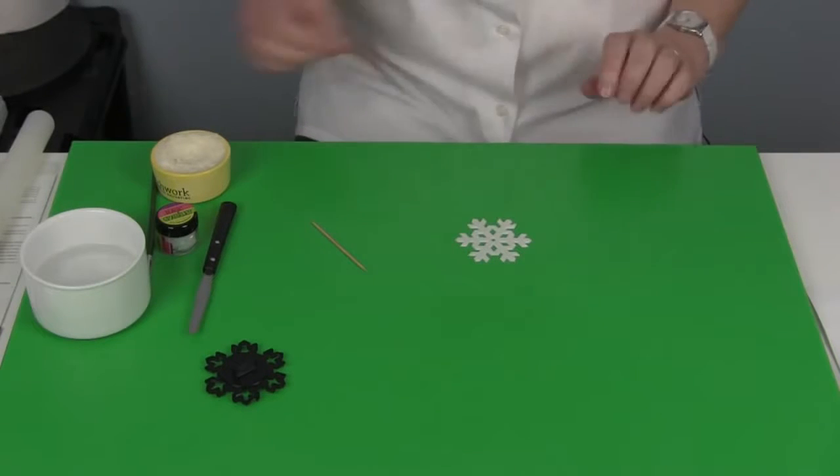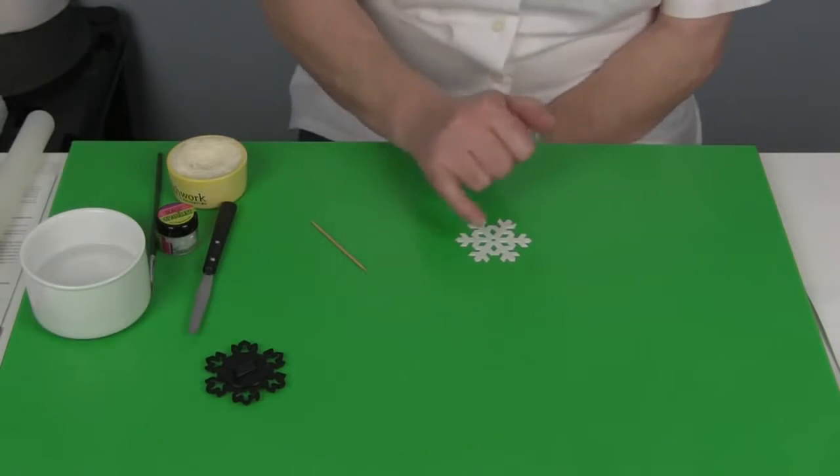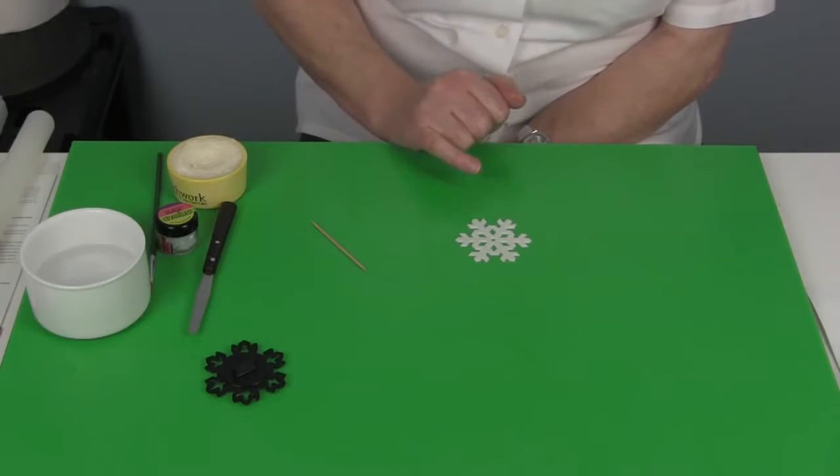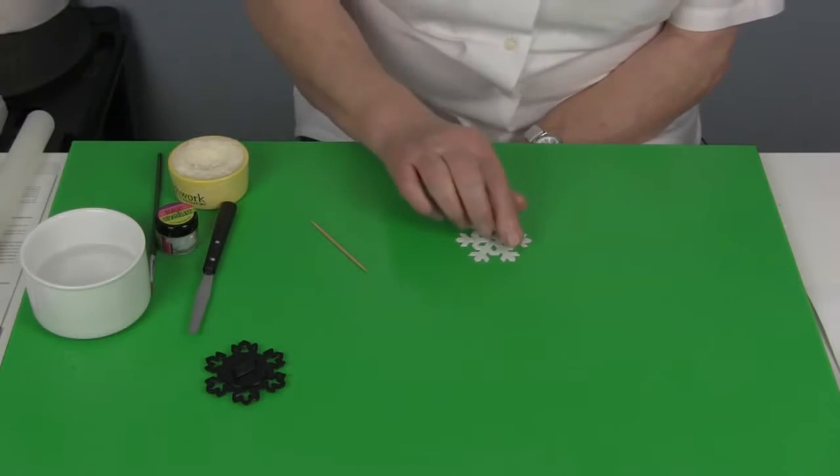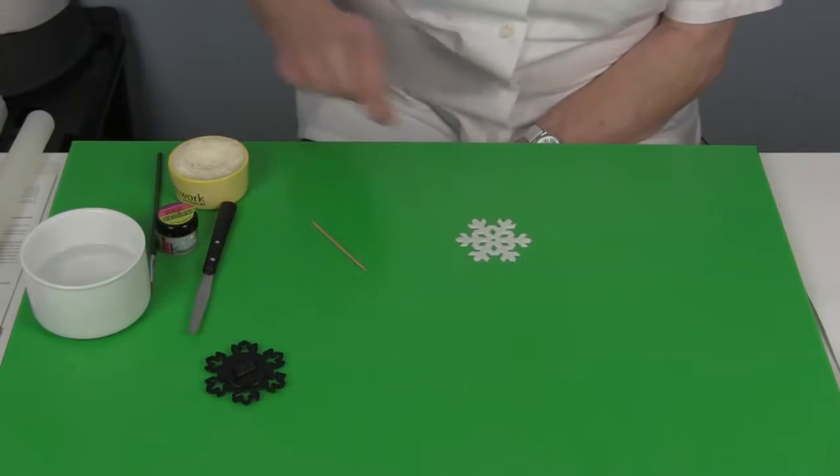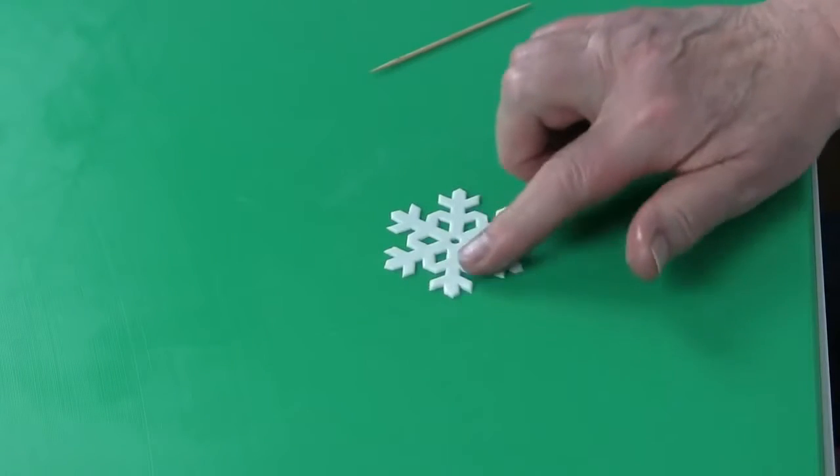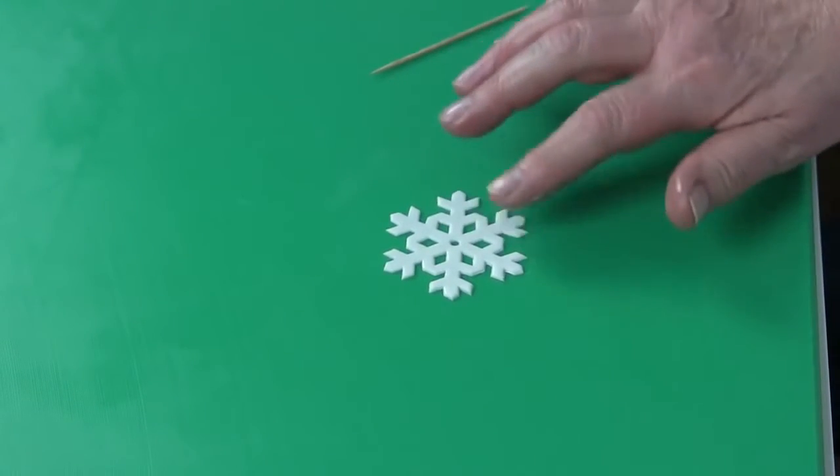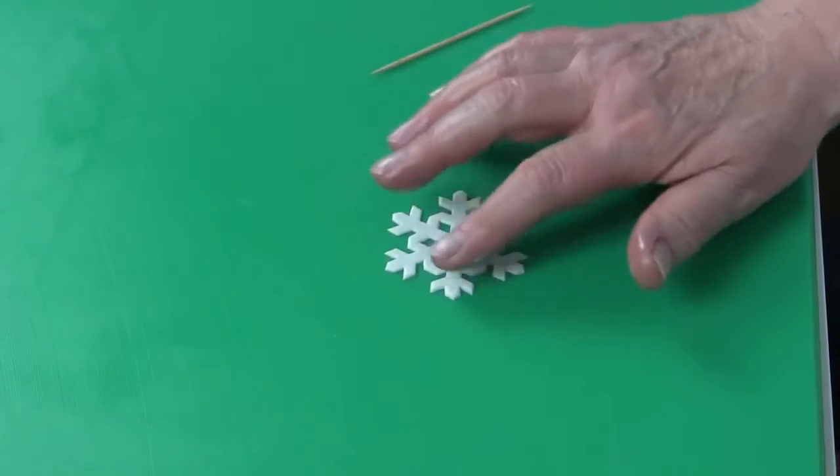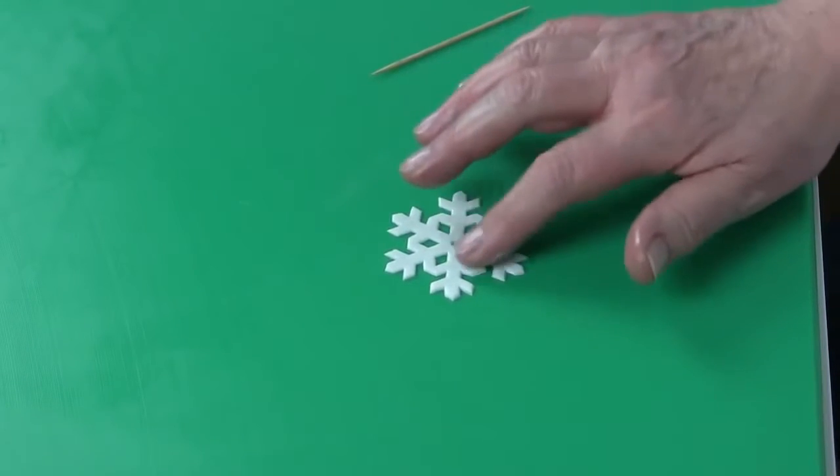Now you take the snowflake and you have a choice of either moistening the surface with water. The only thing is, if you have too much water, it will dissolve the magic sparkles. So I tend to rub the surface with a little of the vegetable shortening. It has no flavor and it will just hold the magic sparkles in place. Just dab that on, you could use a little brush if you wish.